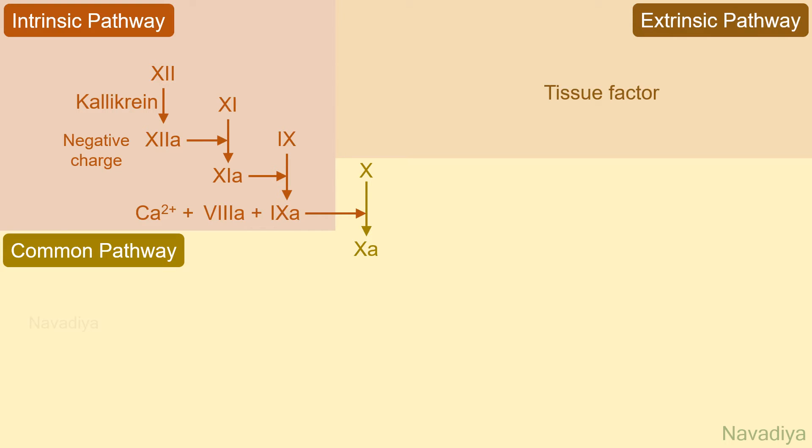Extrinsic pathway starts with exposure of tissue factor. It activates factor 7. Then factor 7 in association with tissue factor and calcium activates factor 10. At the common pathway, factor 10, factor 5a, and calcium form the prothrombinase complex that converts prothrombin into thrombin.